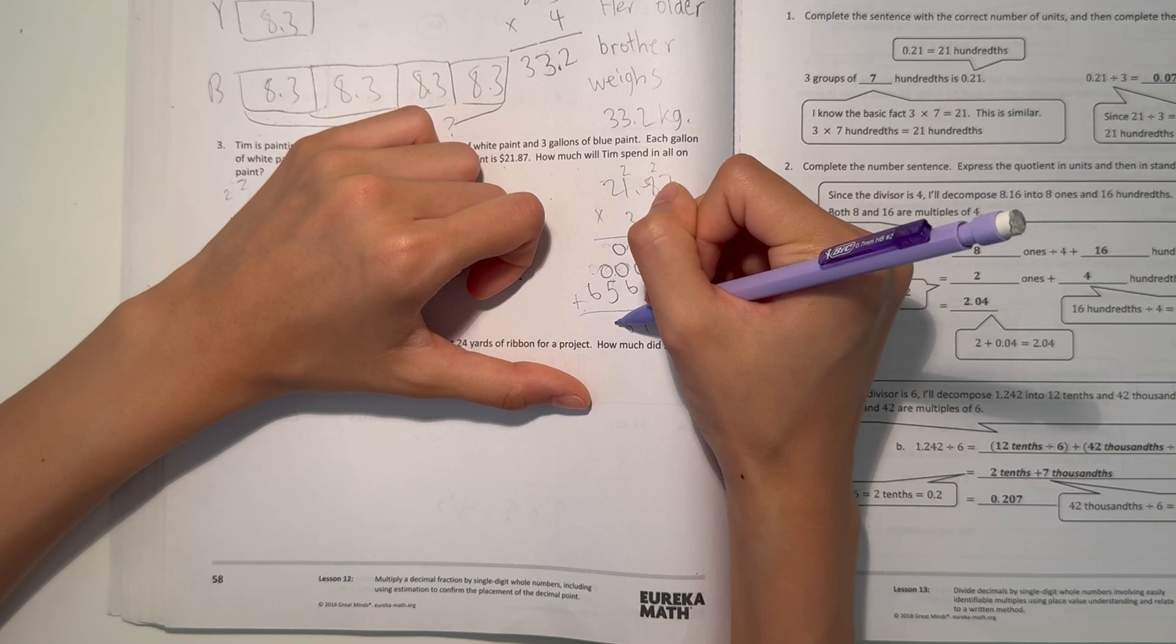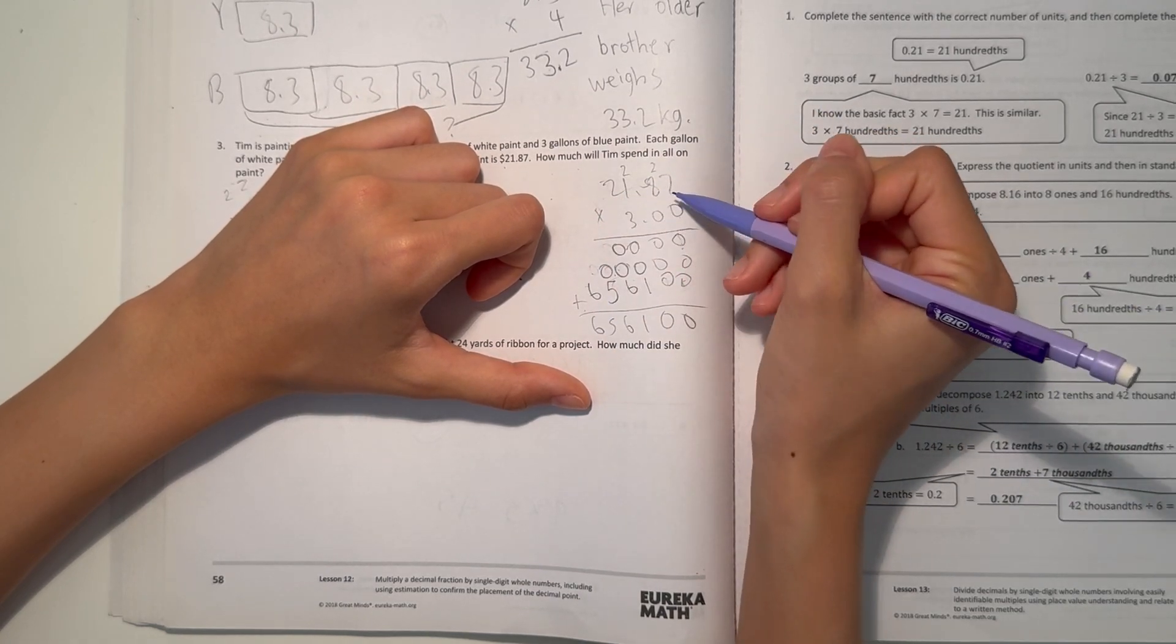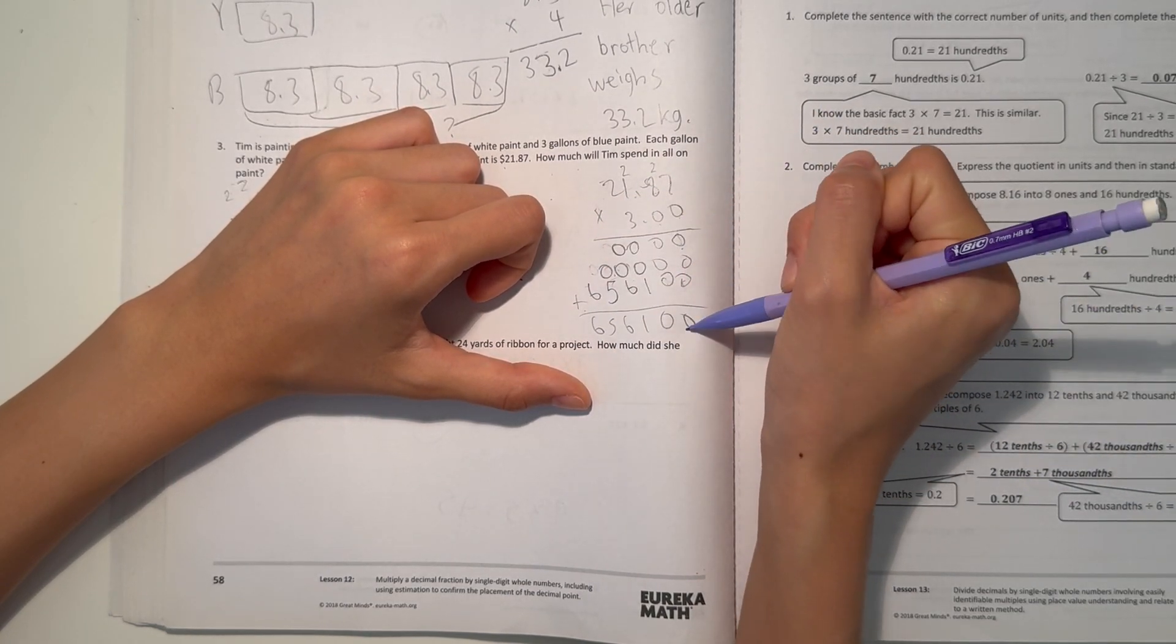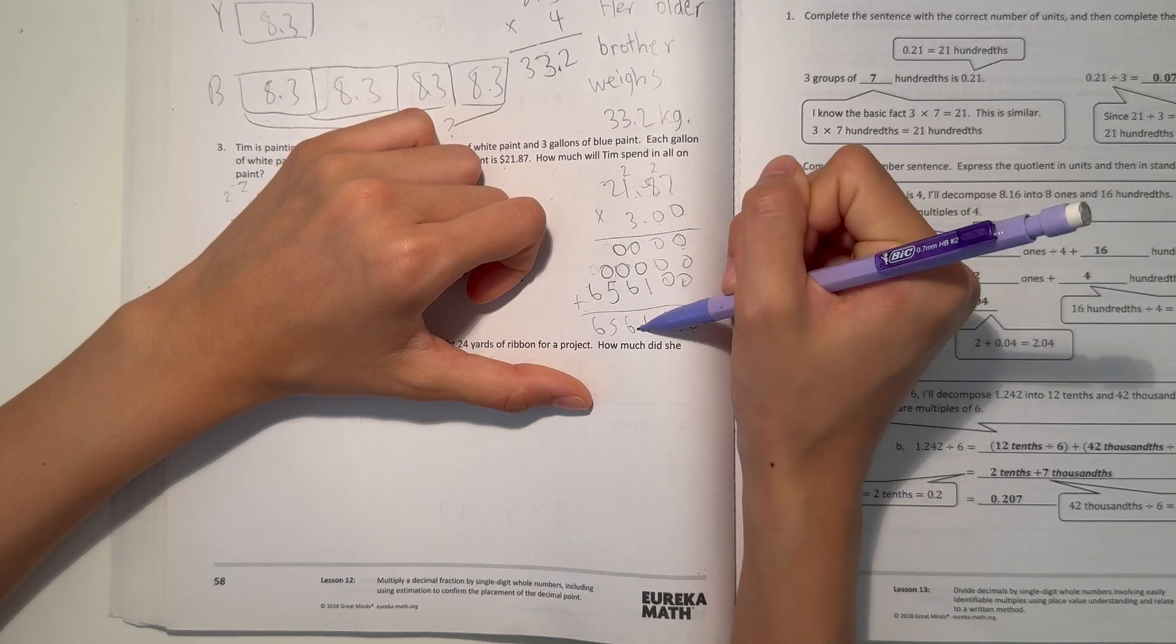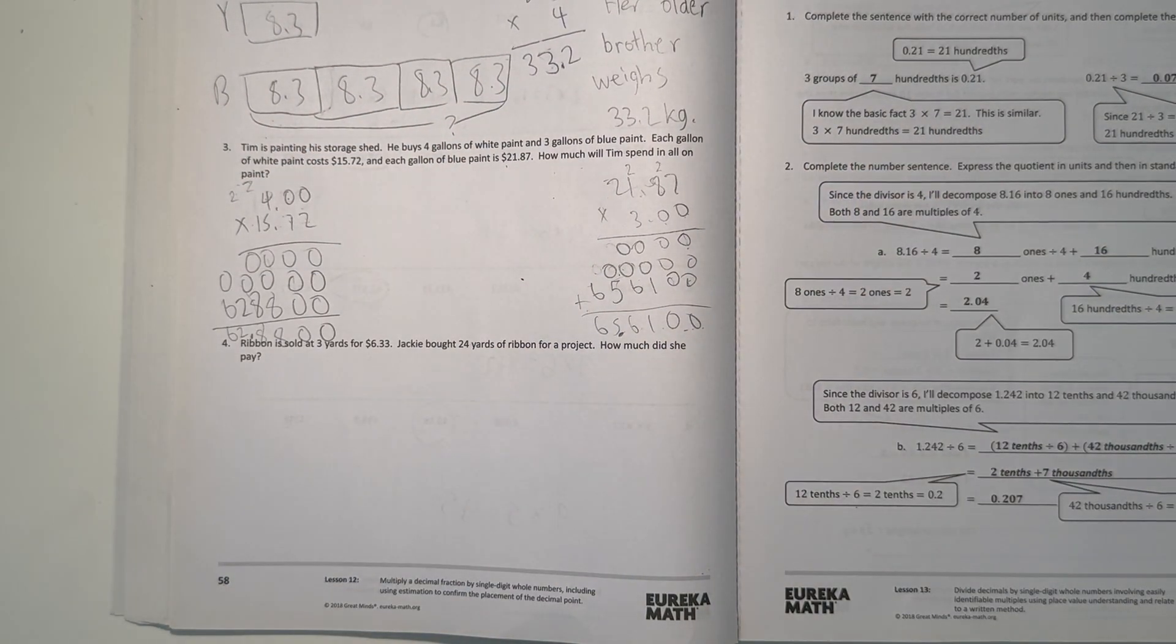Add that together. 0, 0, 0, 1, 6, 5, 6. So we have 1, 2, 1, 2. So that's 1, 2, 3, 4. 65.61.